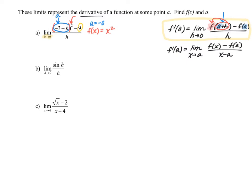Where did that 9 come from? In our limit definition, that would have been f of a. So this 9 should be f of negative 3. Let's check: if our function is x squared and we take negative 3 and square it, sure enough we do get 9. So it looks like our value of a and our function are correct. This limit represents the derivative of the function x squared at a equals negative 3.